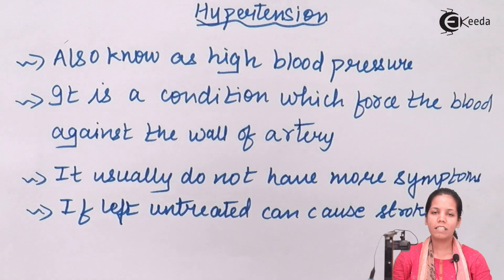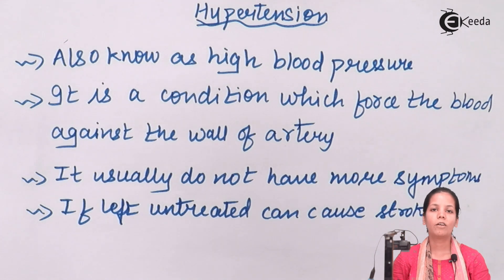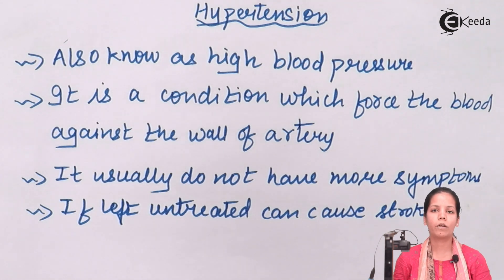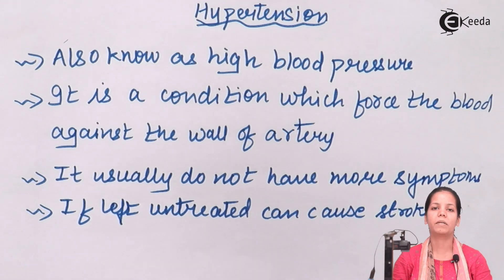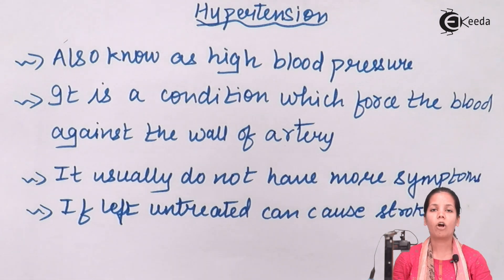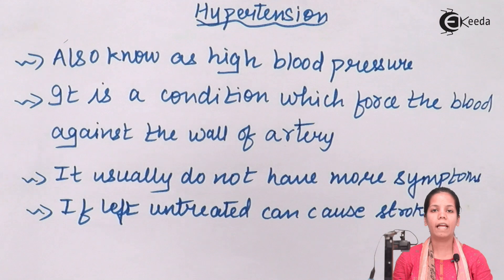Hypertension means high blood pressure or high BP. Whenever somebody has high BP, it means the blood components are pressurizing or putting a lot of pressure on their blood vessel walls — whether arteries or capillaries — and the blood is flowing at a greater speed in their body. Once that happens, there is a lot of dizziness, fatigue, and convulsions.